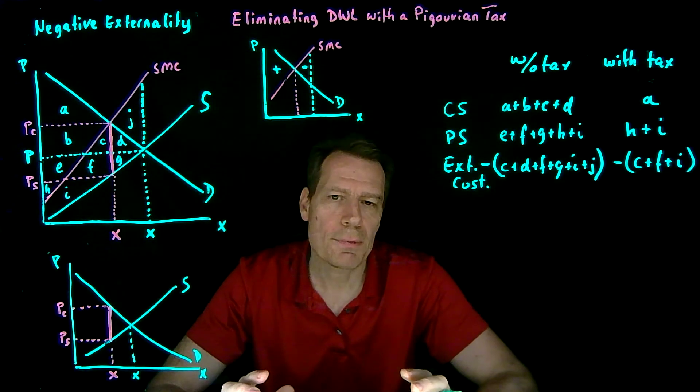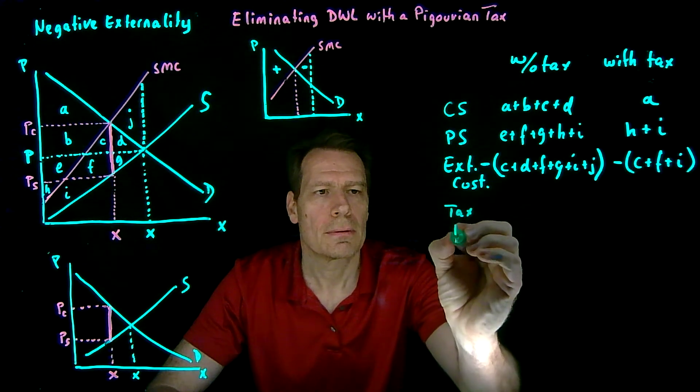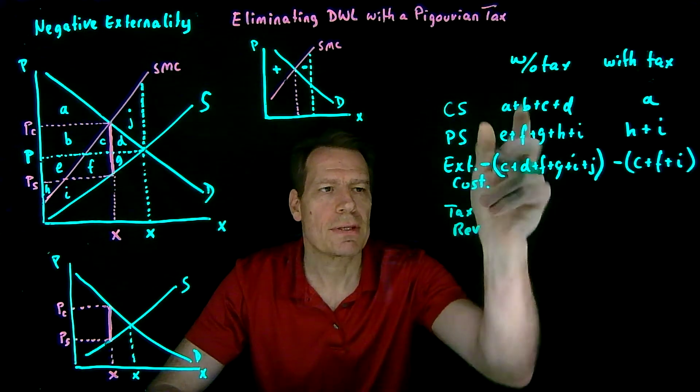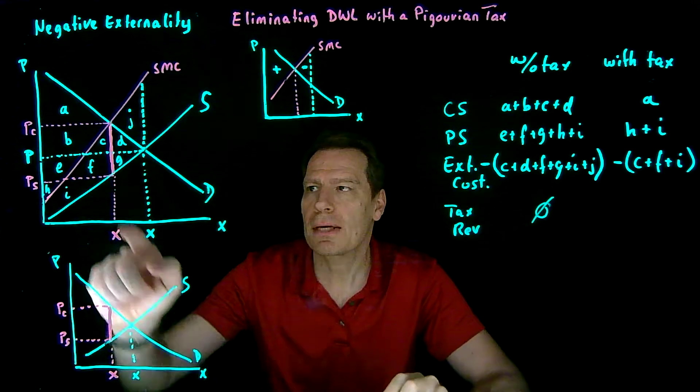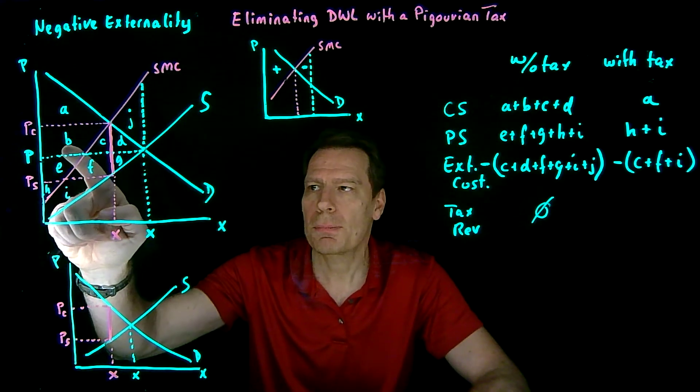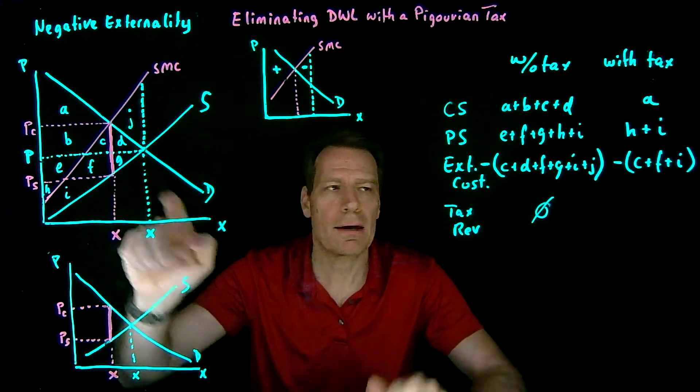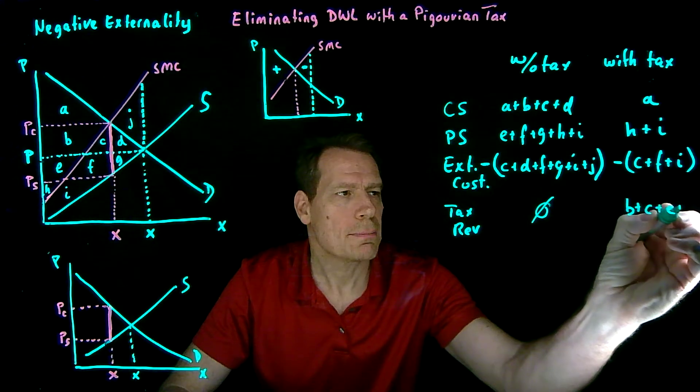Now the final thing we have to include is the tax revenue that gets collected. In the absence of a tax, there is no tax revenue. But with the tax, we get the tax revenue of the tax times the quantity that's being produced. So that would be the box B, C, E, and F. B plus C plus E plus F.